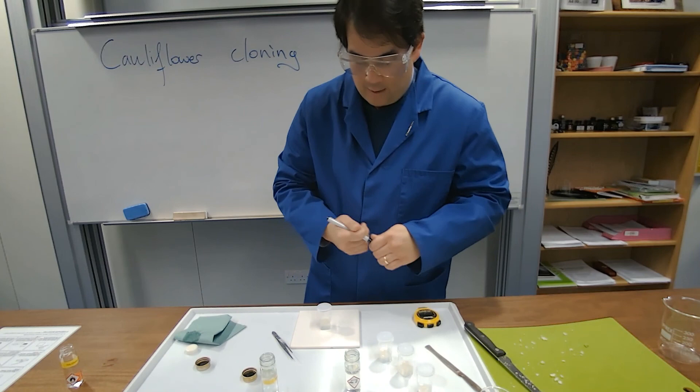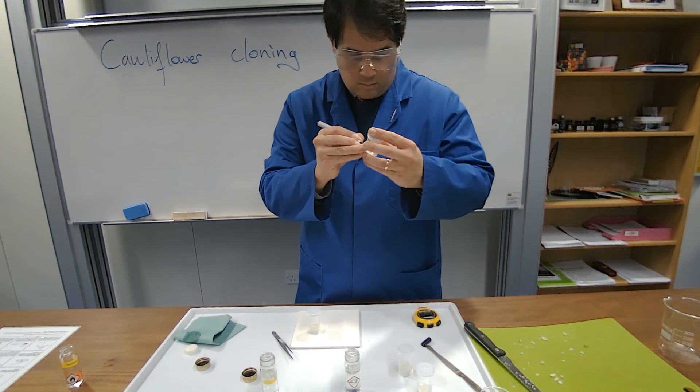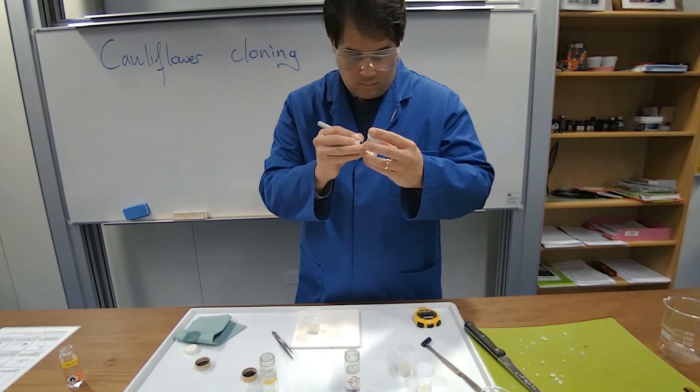Label it with the date and we're good to go. And there you have it. I now have four explants growing on the medium, ready to be put on a windowsill with a little bit of sunlight, and we're ready to clone our cauliflower.